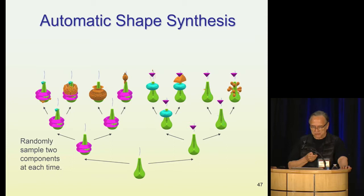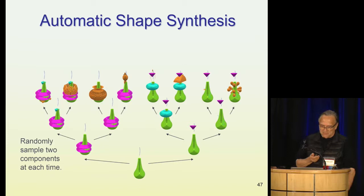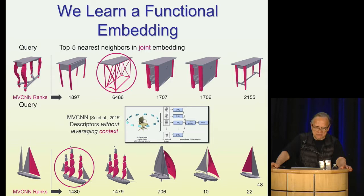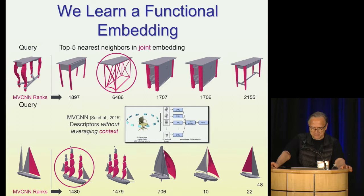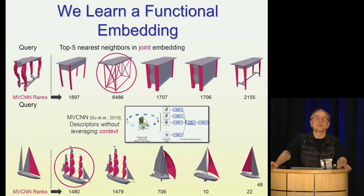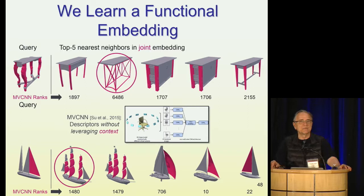What's also interesting is that the embedding we produce is aware of the semantics of the parts. The nearest neighbors in our embedding to parts shown on the left — highlighted in red — are all chair legs for a table and sail fins for the sailboat at the bottom. If you compare what you get using a more traditional embedding based on pure geometric similarity, that would be very different. The numbers shown — like 1897 or 6486 — are the ranks of these retrievals in the ordering according to the more traditional geometric metric. Semantically very similar shapes would be very far apart as geometric shapes. Because we understand the complementarity of parts, parts that play the same role, even though geometrically different, are semantically similar.